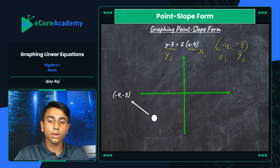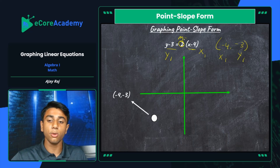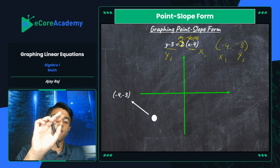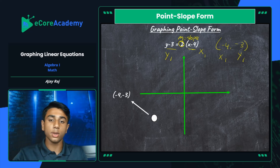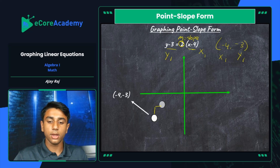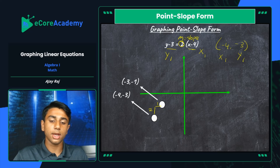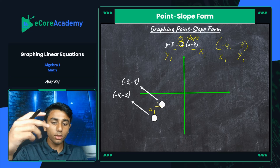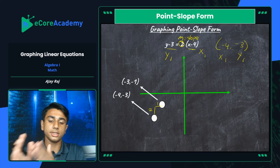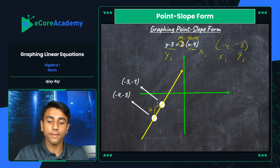Once we've plotted that point, the equation also directly gives us m, our slope. We can calculate rise over run. A slope of two means a rise of two — you're going up two — and a run of one, so you go right one. Going up two and right one from negative four comma negative three gets us to the point negative three comma negative one. Now that we have our two points, we can graph our line, which is the official representation of this equation.